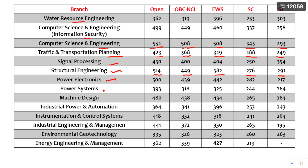Other branches include Power Electronics, Power Systems, Machine Design, Industrial Power and Automation, Instrumentation and Control Systems, Industrial Engineering and Management, Environmental Geotechnology, and Energy Engineering and Management. These are all the branches offered by NIT Calicut with cutoffs for various categories. You can pause the video to check the cutoffs for whatever branch you require and see whether your GATE score is greater than that score.